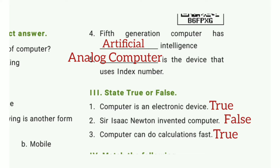State true or false. First one: Computer is an electronic device. The answer is true. Second one: Sir Isaac Newton invented computer. The answer is false. Third one: Computer can do calculations fast. The answer is true.